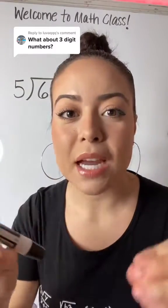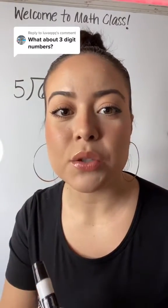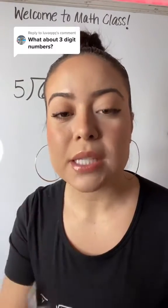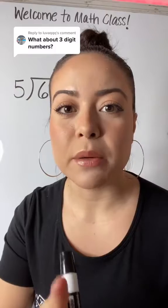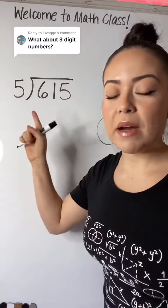Girlie, you caught me at a right time right before I went to work. Let me show you how to do three digit divided by one digit number. 615 divided by five.